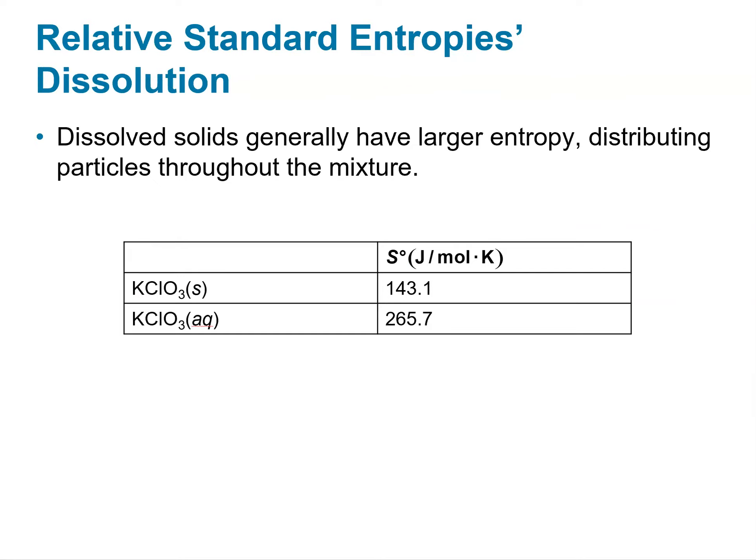There are also differences in standard entropy for a compound whether it's in solid phase or dissolved in aqueous solution. Dissolved solids typically have higher levels of entropy than their solid state because of the distribution of particles throughout the mixture and the increased ability for translational orientation. For example, one solid has a solid-phase value of 143.1 joules per mole Kelvin, but dissolved in water it has a standard entropy of 265.7 joules per mole Kelvin.